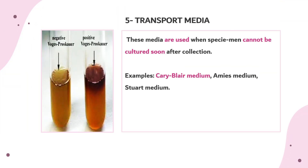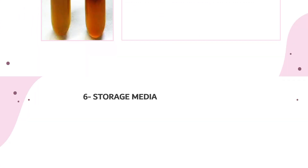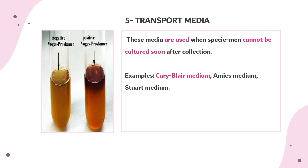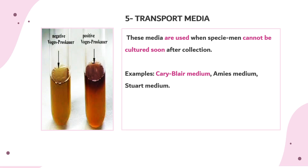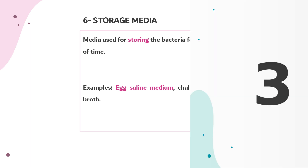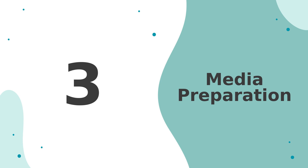The fifth type of routine media is transport media. These media are used when a specimen cannot be cultured soon after collection. Carry-Blair medium, Amies medium, and Stuart medium are good examples. The sixth and last type is storage media, used for storing bacteria for a long period of time, such as egg saline medium and cooked meat broth.